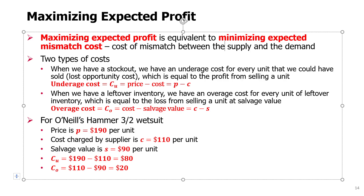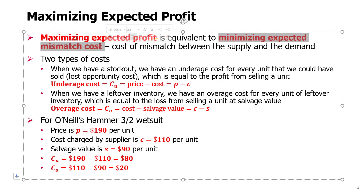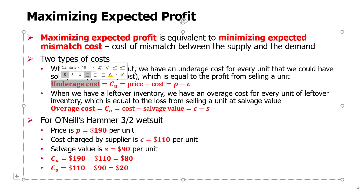When we try to maximize expected profit, we will at the same time be minimizing the expected mismatch cost. The mismatch cost is due to two types of costs. When we have a stockout — meaning demand exceeds the quantity we ordered — we will experience something called an underage cost.